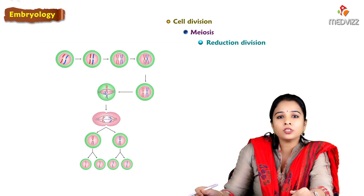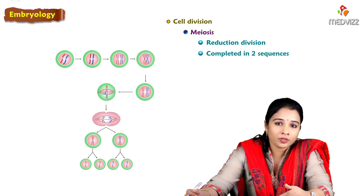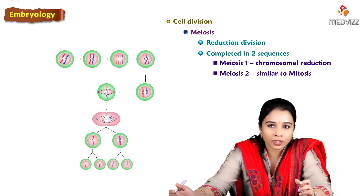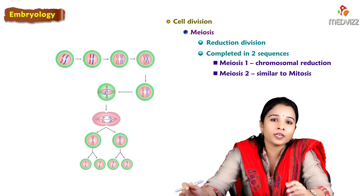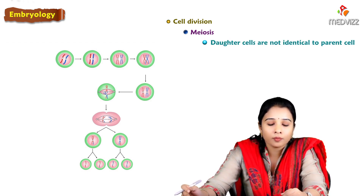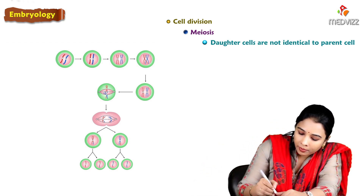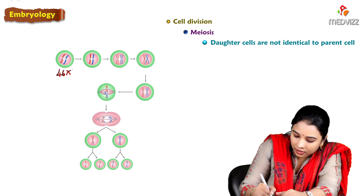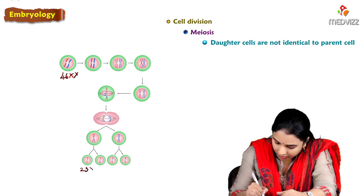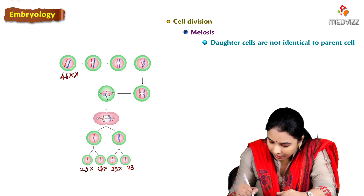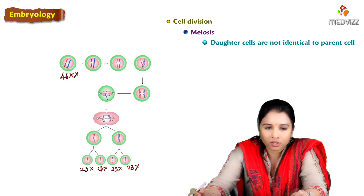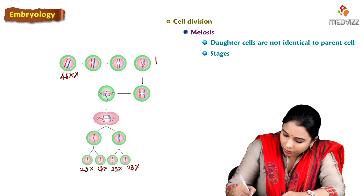Meiosis is a reductional division that completes in two successive sequences: meiosis 1 and meiosis 2. Meiosis 2 is similar to mitosis, but meiosis 1 is where the reduction of chromosomes happens. The daughter cells are not identical to the parent cell — the parent cell is diploid (46 XX), but the daughter cells will have haploid number (23 X), meaning half the number of chromosomes.